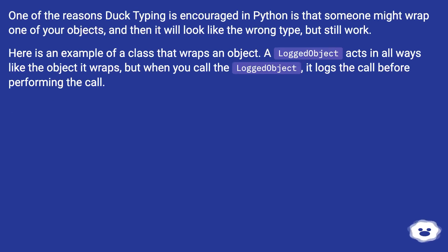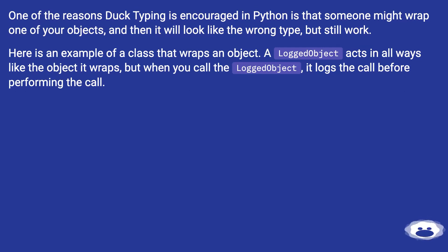One of the reasons duck typing is encouraged in Python is that someone might wrap one of your objects, and then it will look like the wrong type but still work. Here is an example of a class that wraps an object. A logged object acts in all ways like the object it wraps, but when you call the logged object, it logs the call before performing the call.